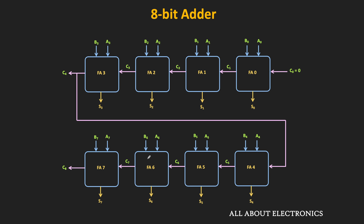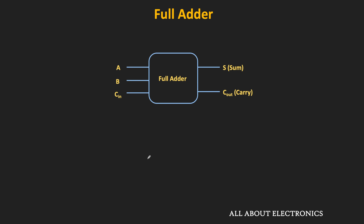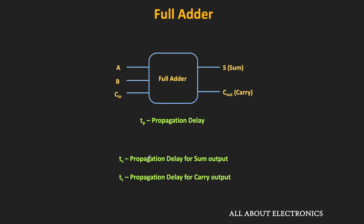So far we have assumed that once input bits are applied, the sum and carry of each adder are available instantaneously. But in reality, once input bits are applied, the valid output is available after a certain delay, known as the propagation delay. This delay typically ranges from nanoseconds to microseconds and depends on the internal circuit and the propagation delay of individual logic gates.